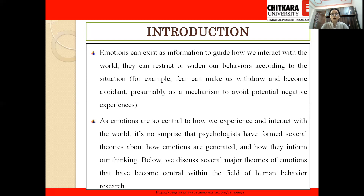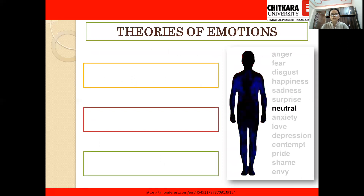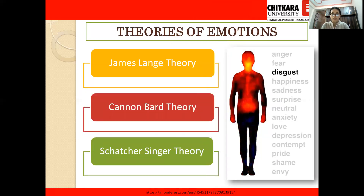Since emotions are so central to how we experience and interact with the world, it's no surprise that psychologists have formed several theories about how emotions are generated and how they shape our thinking. Many psychologists have done different types of research to find out how emotions are generated within individuals and how they affect our thinking and perceptual patterns. Today we'll discuss three important theories: the James-Lange theory, the Cannon-Bard theory, and the Schachter-Singer theory.